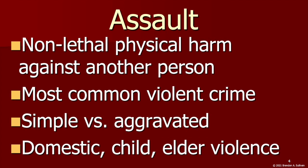Now let's look at assault, which involves non-lethal physical harm against another person. This is the most common form of violent crime. There are two different categories of general assault: simple and aggravated. The difference between the two depends on two factors — the severity of injuries to the victim and whether or not a weapon was used. If a weapon was used and/or the victim was severely injured, it's an aggravated assault. If there was no weapon and there were only minor or no injuries, it's a simple assault.